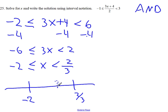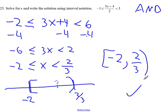Okay, so now we want all the numbers that are greater than or equal to negative 2 but less than 2 thirds. So we'll write negative 2 comma 2 thirds. And that's that.